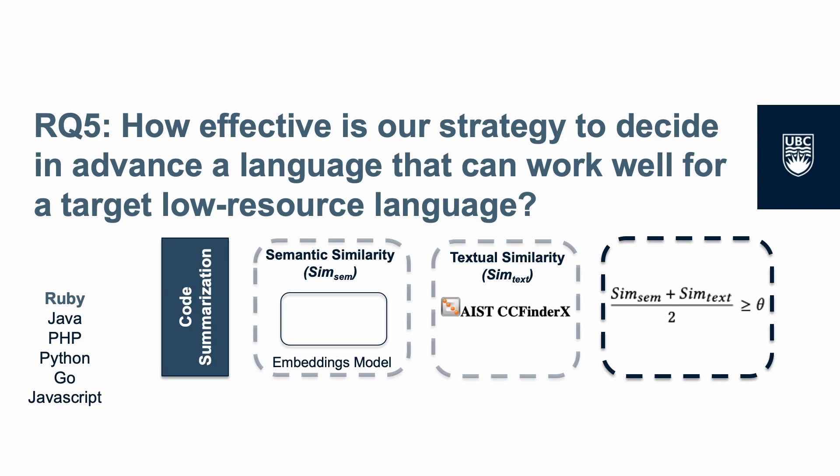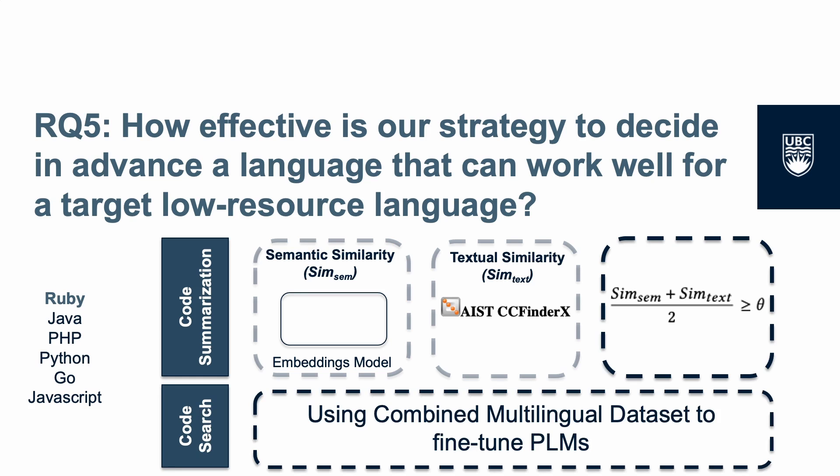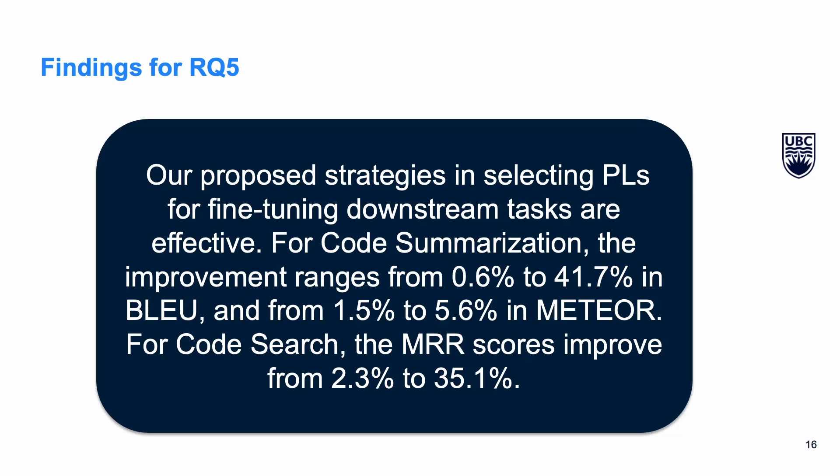Different programming languages have different syntax, and code fragments written in different languages are usually non-interchangeable. We propose a strategy to choose in advance programming languages that work well for fine-tuning multilingual PLMs for code summarization and code search. For code summarization, we consider suitable programming languages that have both similar semantic and textural properties to the target language. For code search, based on our empirical experiments, PLMs fine-tuned with the combined multilingual dataset performed best, so we propose using that combined dataset. Our proposed strategies are effective, with observed improvement in both code summarization and code search.